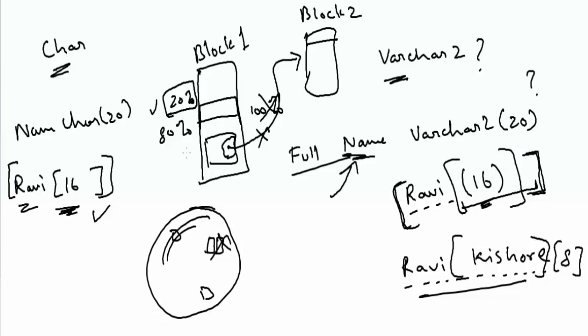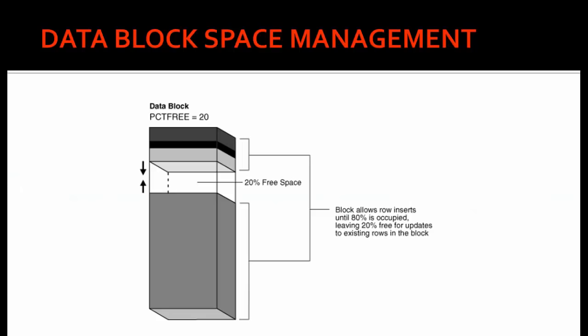The 20% is the minimum reserved space. If updates exceed that 20%, row chaining can still occur, but it can be removed by reformatting or optimizing fragmentation inside the database — something covered in performance tuning. Always remember: Oracle database keeps 20% free space inside every data block to accommodate future updates of rows in that block. This 20% free space is only for updates — it will never be used for new insertions. When an update happens, it first fills this 20% space, and then moves to another block.